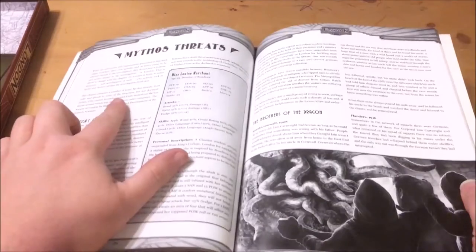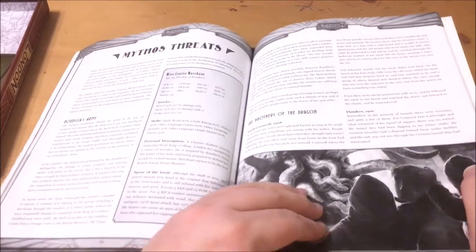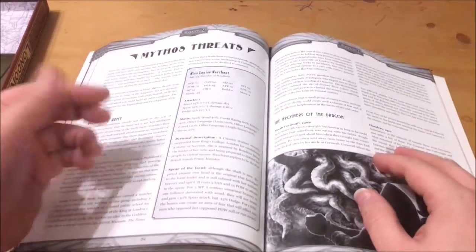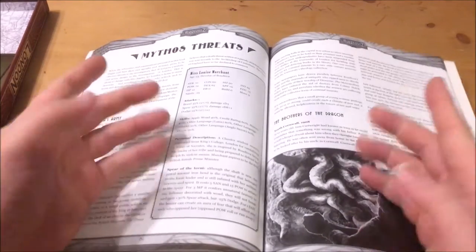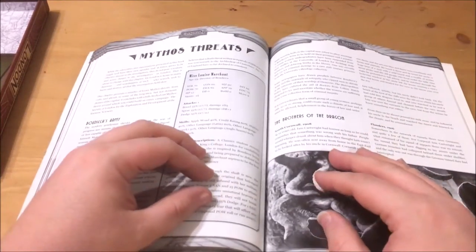The following chapter is Mythos Threats. This presents some Mythos Threats that are ready to use. It features the likes of Boudicca's army, a group of militant women who unbeknownst to them are being empowered by the magical spear of the Iceni Queen herself. The Brothers of the Dragon who are a group that seeks to give the Chthonians dominion over London.